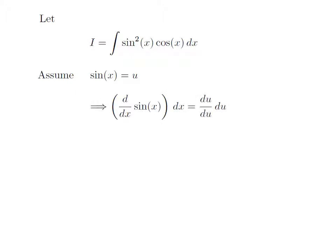Taking differential of both sides, we get differentiation of sine of x with respect to x into differential of x is equal to differentiation of u with respect to u into differential of u. As we know, differentiation of sine of x with respect to x is equal to cosine of x and differentiation of u with respect to u is equal to 1, so we are left with cosine of x into differential of x is equal to differential of u.